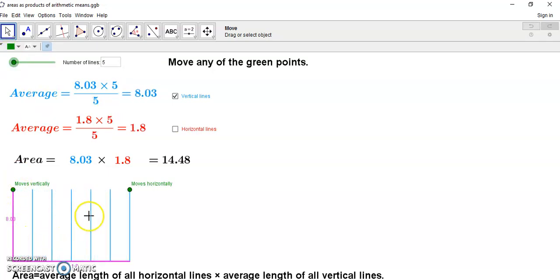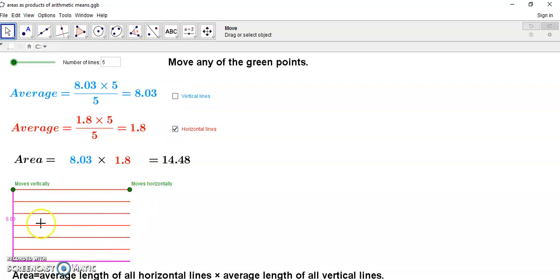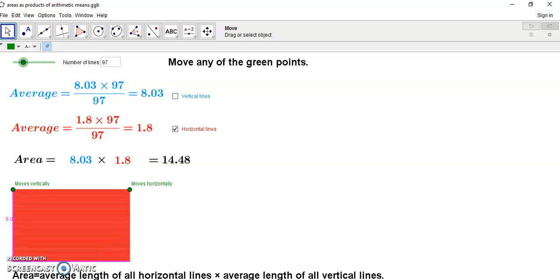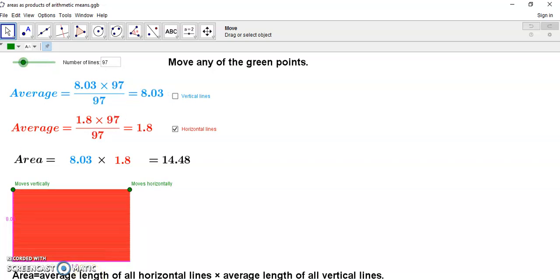let's say you only got vertical lines it doesn't matter how many you have. The arithmetic mean or the average of these lines will always be the side and similarly the horizontal lines will always be the side here so that area is generally defined as the product of two arithmetic means and I said average length but it's actually the arithmetic mean length of all the horizontal lines.